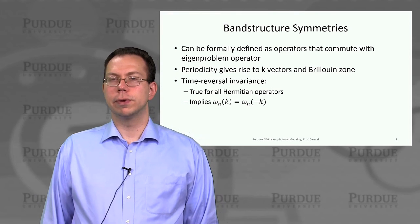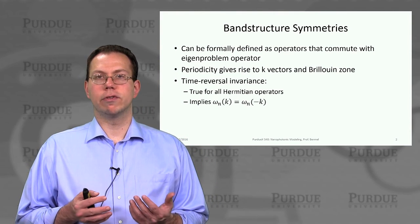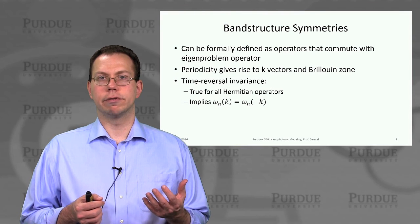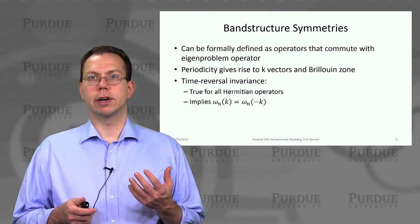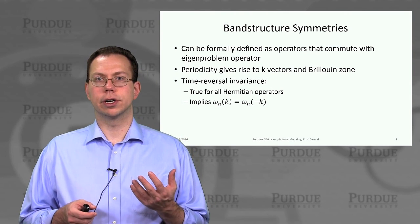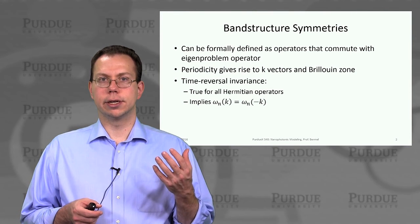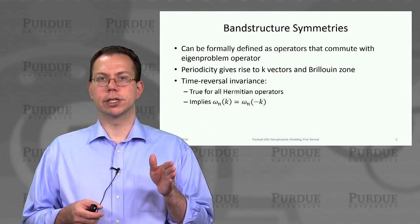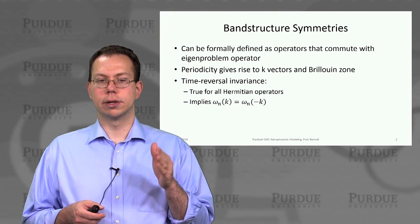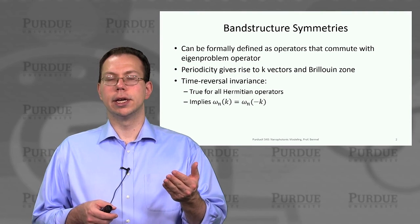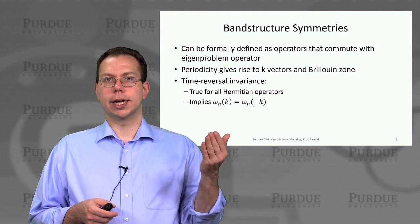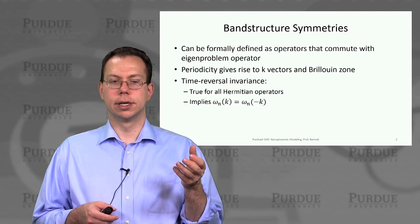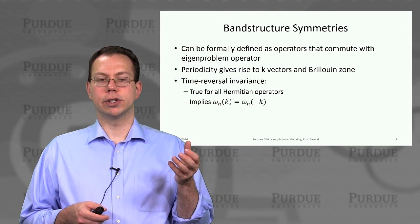We can understand band structure symmetries as a broad set of operators that would commute with the eigenproblem operator. If you recall the eigenproblem we're using — the so-called master equation, curl of epsilon-inverse curl of H — that equation is associated with an operator times H. The curl of epsilon-inverse curl is written as that operator, which we subsequently turn into a matrix in our calculation. But before we do that, as a pure operator, we can try to commute it with various symmetry operators.